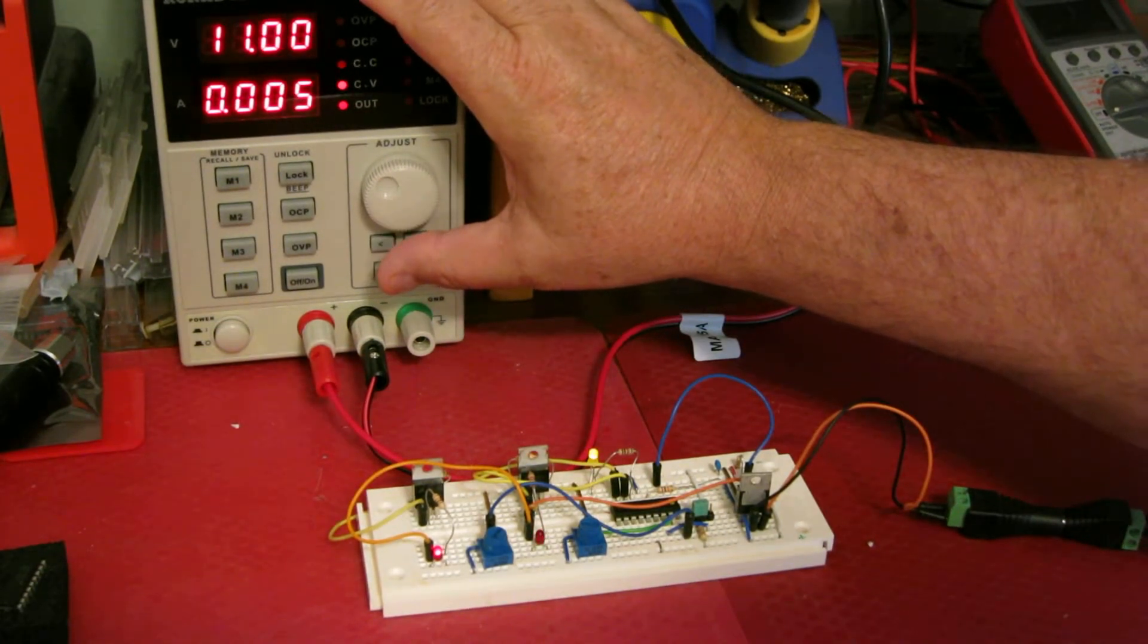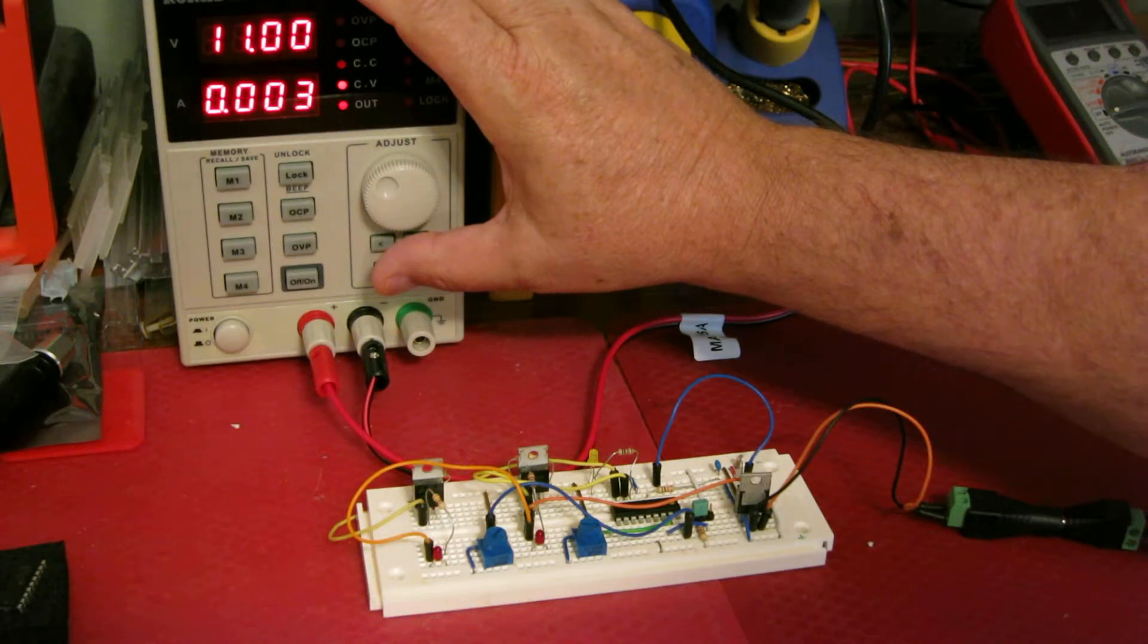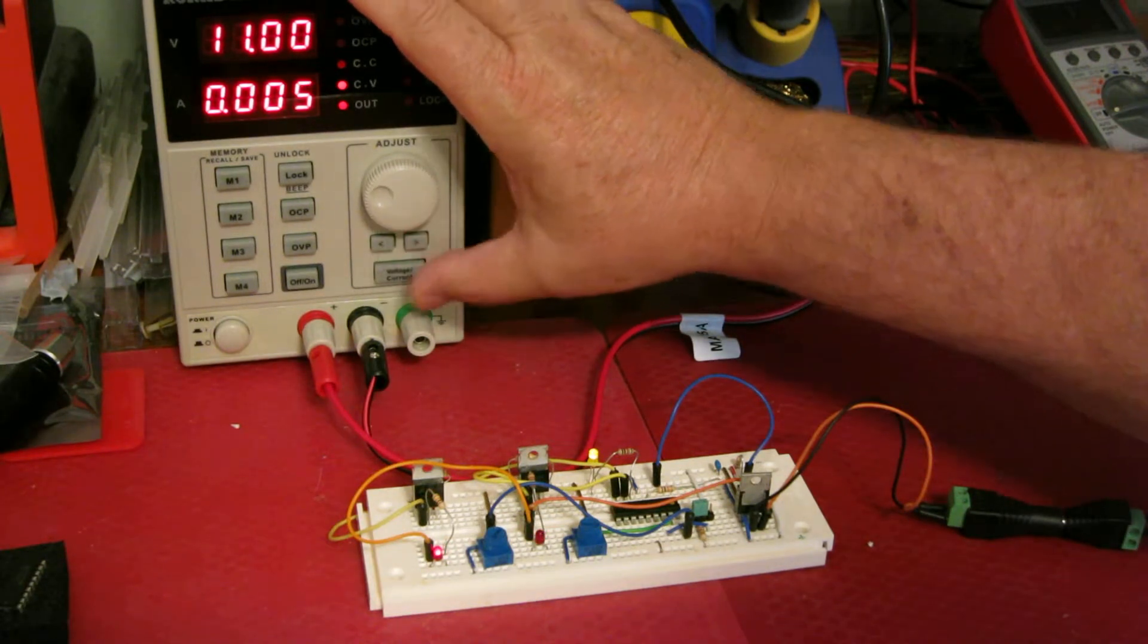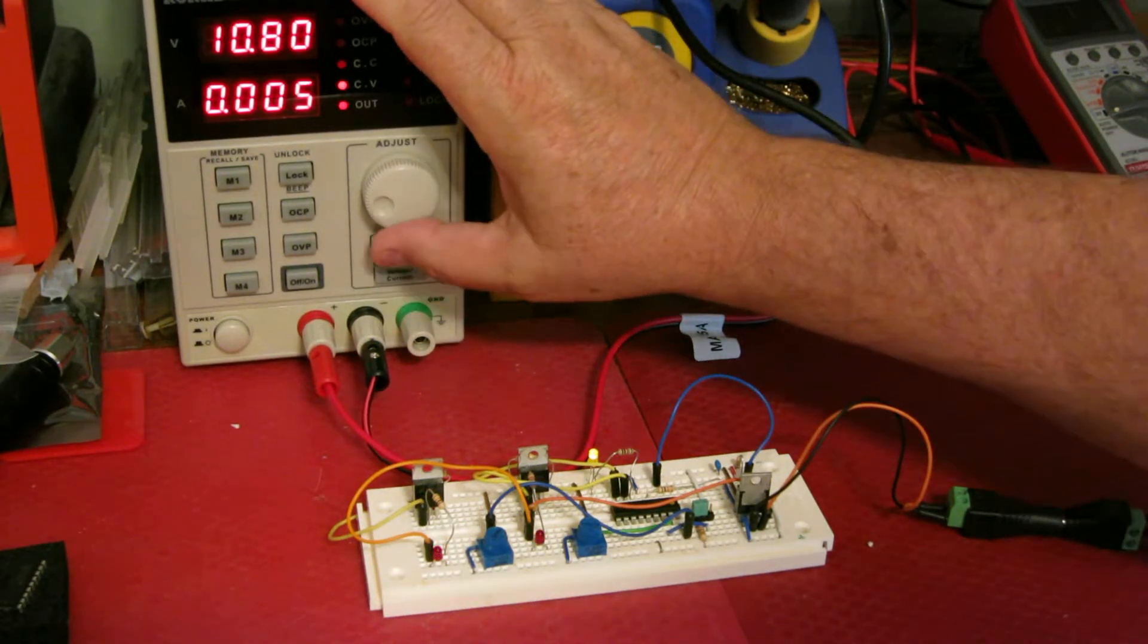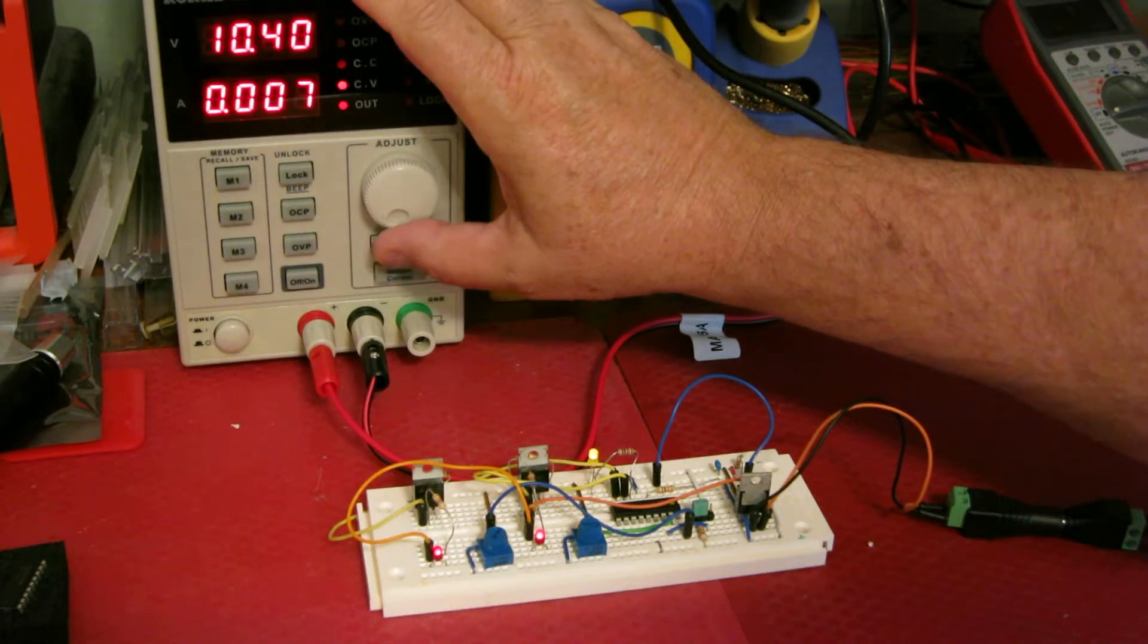And the power still goes to the MOSFETs and eventually to the dew heaters. So what we're going to do next is we're going to drop the voltage down further, and under 10.